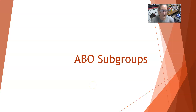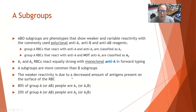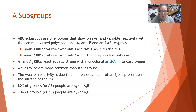Hi, this is Dr. A with another immunohematology lesson. We're going to talk about ABO subgroups. ABO subgroups are phenotypes that show a weaker or variable reactivity with commonly used polyclonal anti-A, anti-B, and anti-AB reagents.